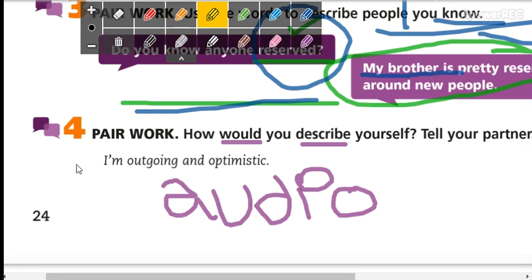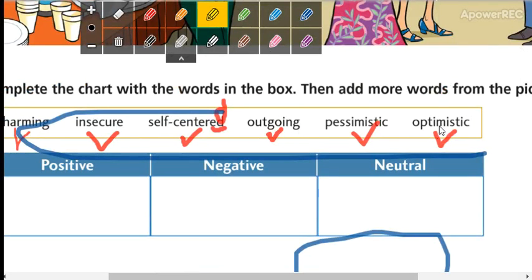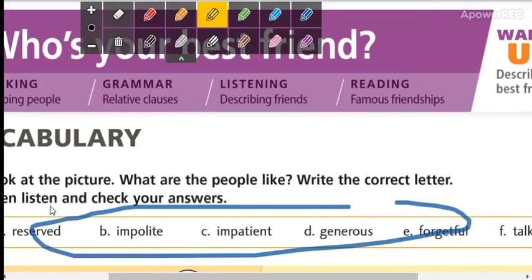For example, I'm outgoing and optimistic. So you send an audio saying anything about you. You can use these words or you can use these words. Okay, for example, in my case I could say I am talkative and forgetful but very optimistic.